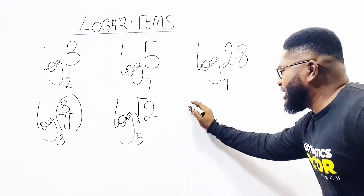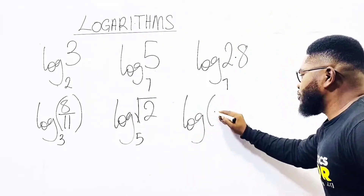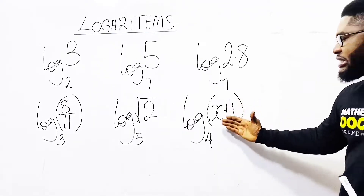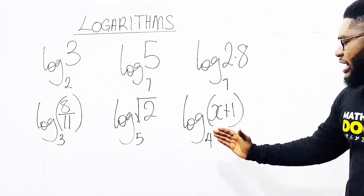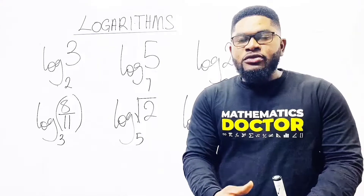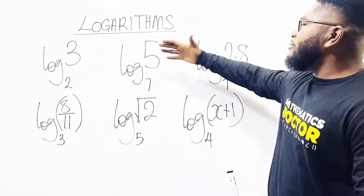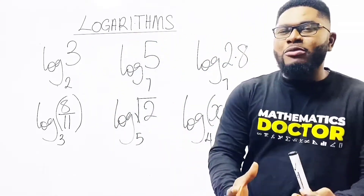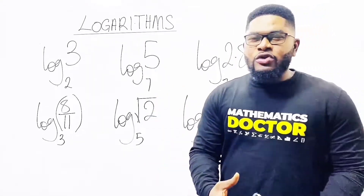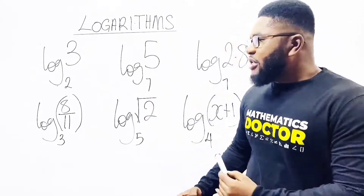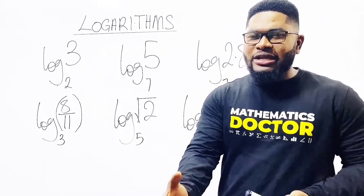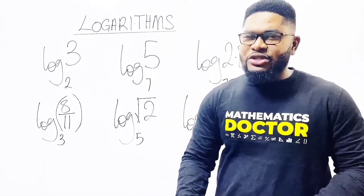Finally, let me bring a variable: log of (x + 1) base 4. The complete number here is x plus 1, which is a binomial, and this is base 4. So, ladies and gentlemen, in a nutshell, logarithm can be represented with any form of real number. At this point, I am going to help you use logarithm to solve mathematical questions and give you a massive understanding so you will find it very easy when handling them in math or in examination.